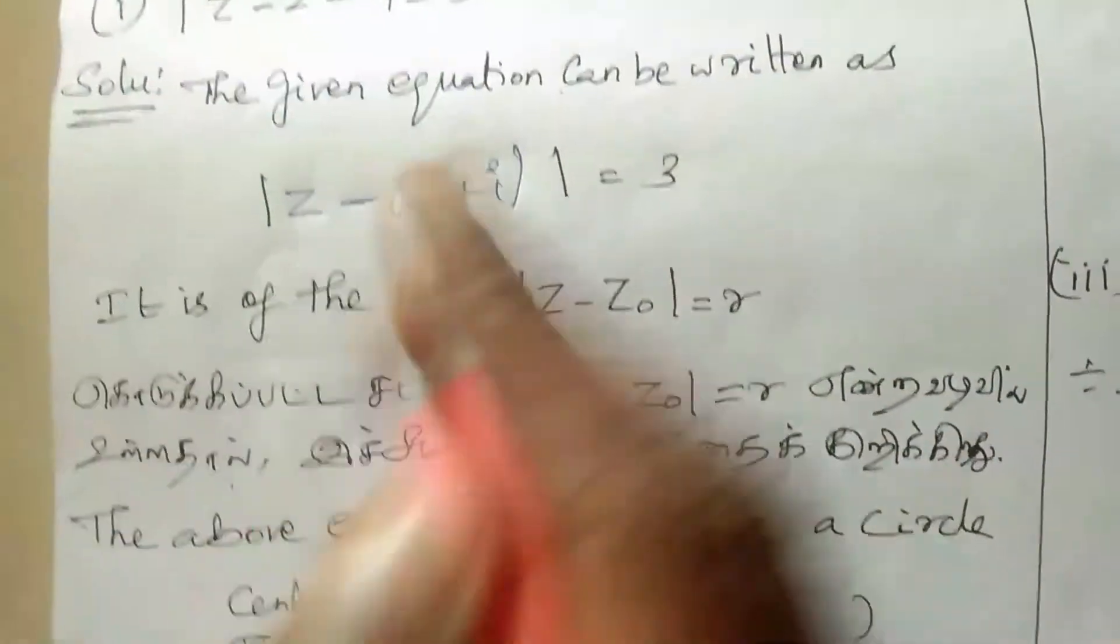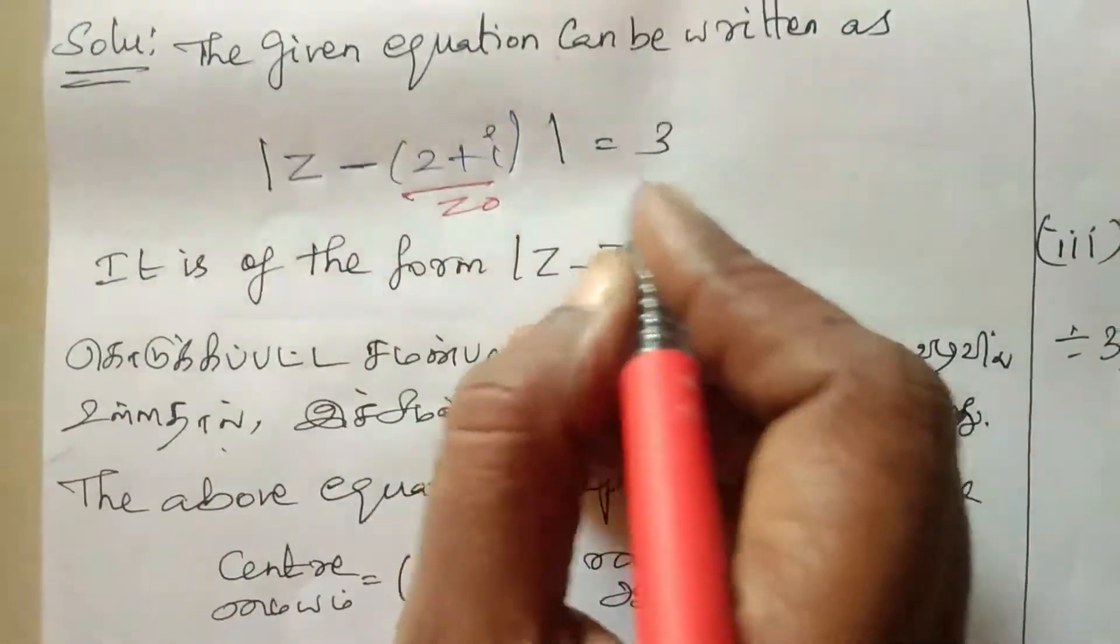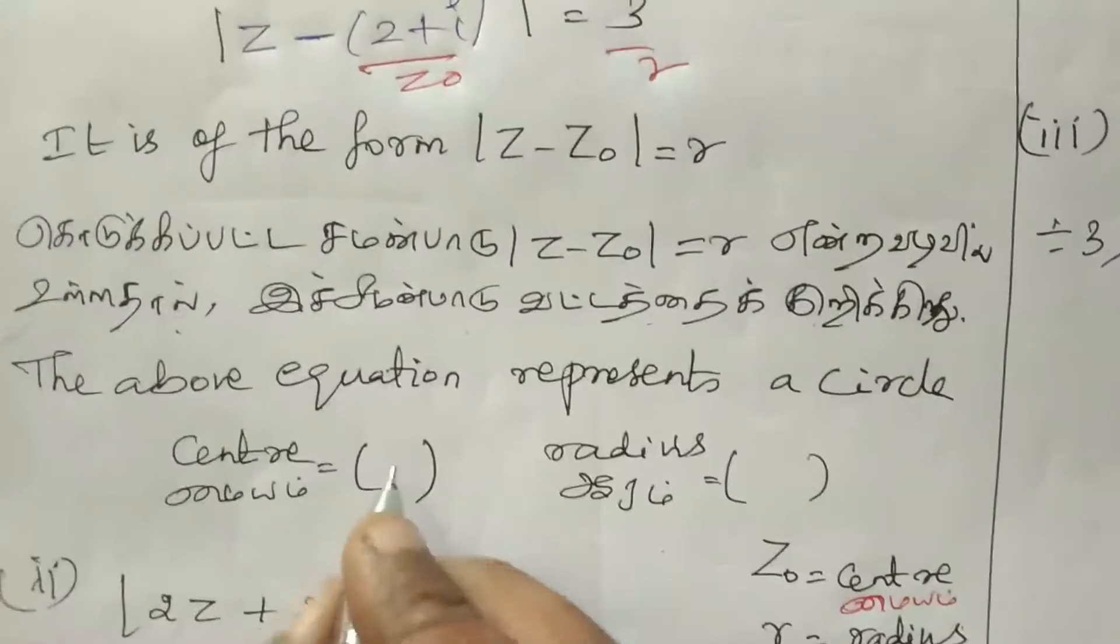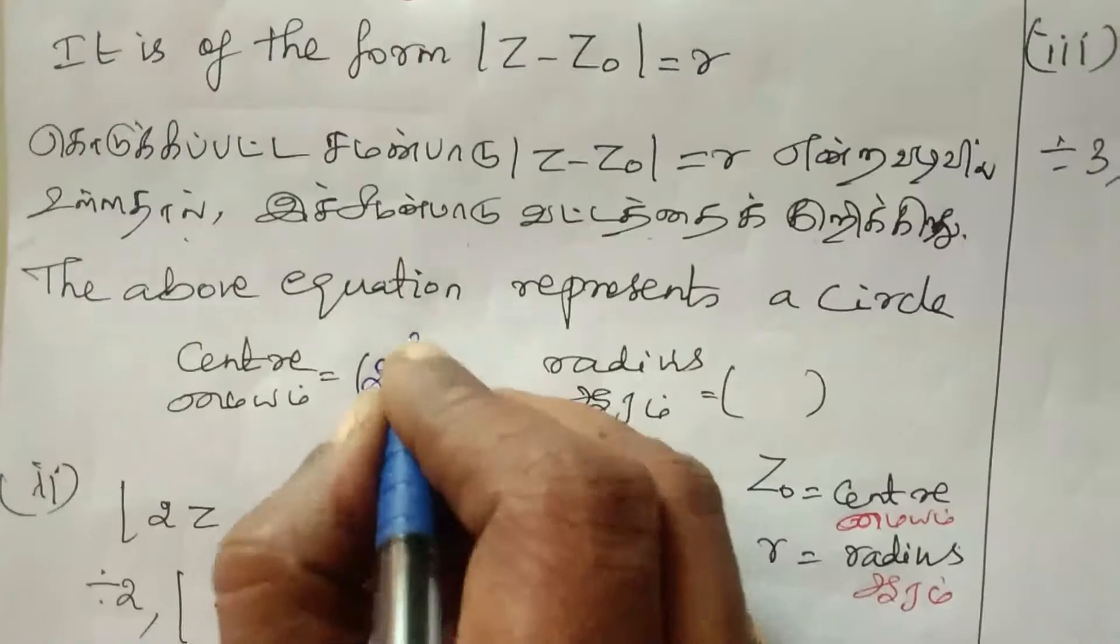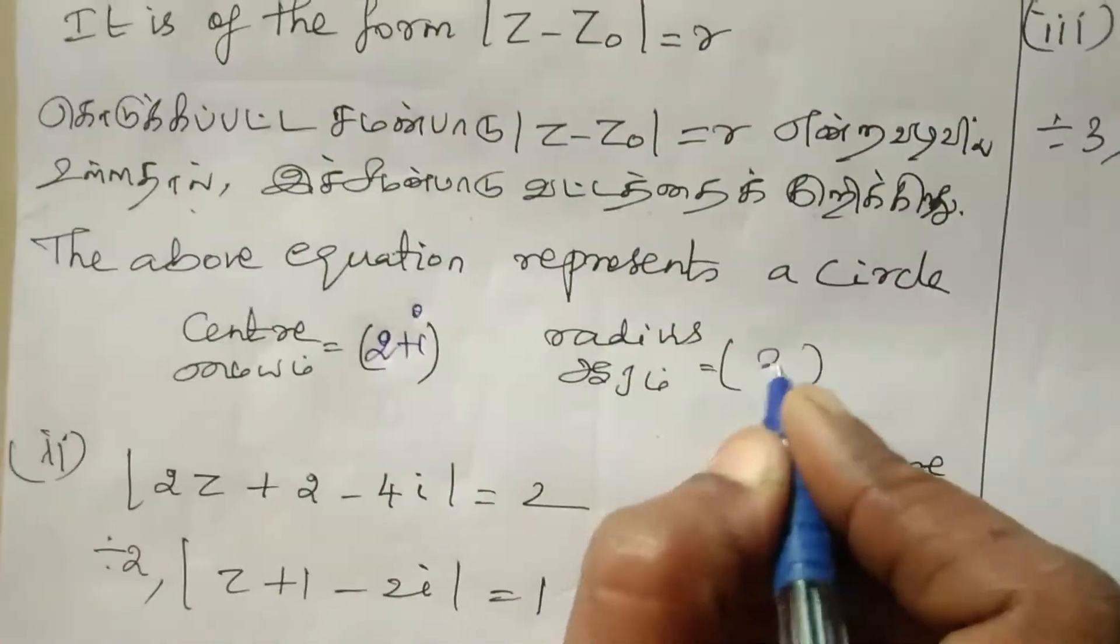Z minus 2 plus I equal to 3. This is of the form modulus Z minus Z not equal to R. Z not is the center, R is the radius. So center is 2 plus I, which is 2, 1, and radius is 3.